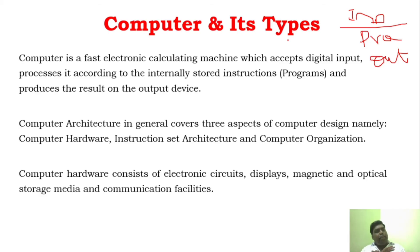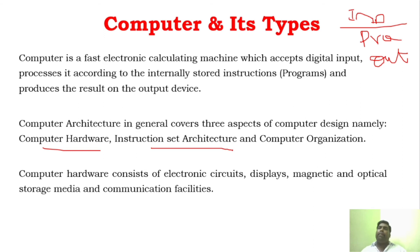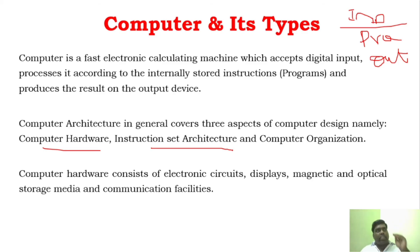The important aspects of computer architecture involve computer hardware, its instruction set architecture, and computer organization. Computer hardware has a lot of electronic circuits, displays like monitors, and magnetic and optical storage media. And you know what are the different input and output devices.